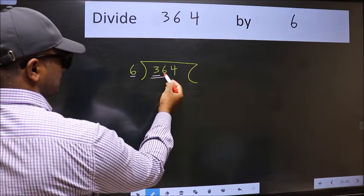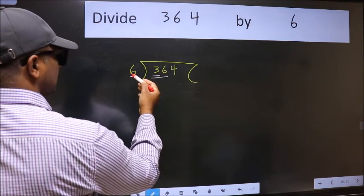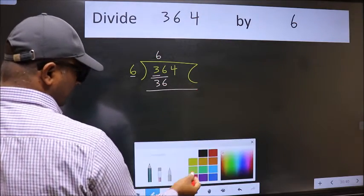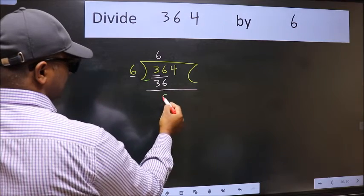So take two numbers, 36. When do we get 36 in the 6 table? 6 times 6 is 36. Now we subtract and get 0.